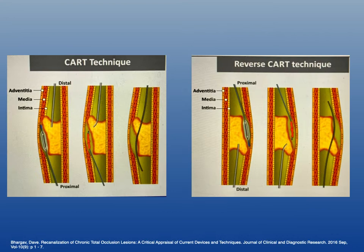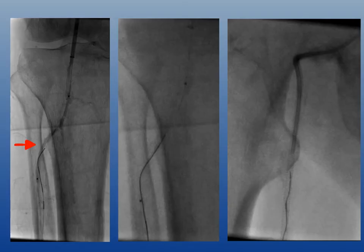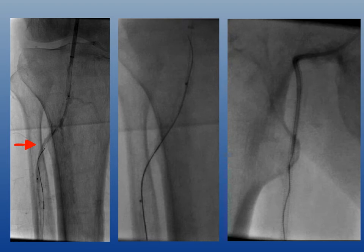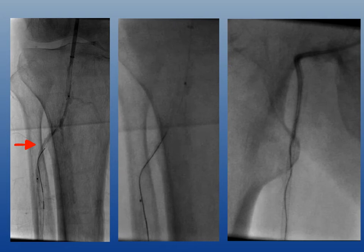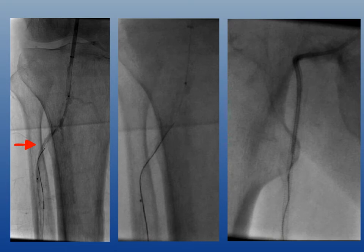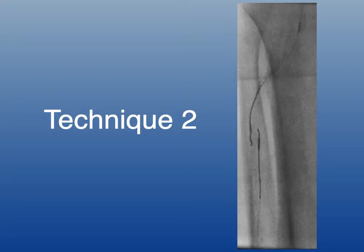Technique one is called CART and reverse CART. You place a balloon either from below (CART) or above (reverse CART) and perform angioplasty to disrupt the tissue between the two systems, allowing through-and-through guide wire access. In this case, I couldn't get through, so I placed a balloon from above — reverse CART — performed a 2.5 to 3 millimeter angioplasty, then recanalzied using a CTO guide wire from below, achieving through-and-through access and advancing the wire through the catheter and sheath at the groin.